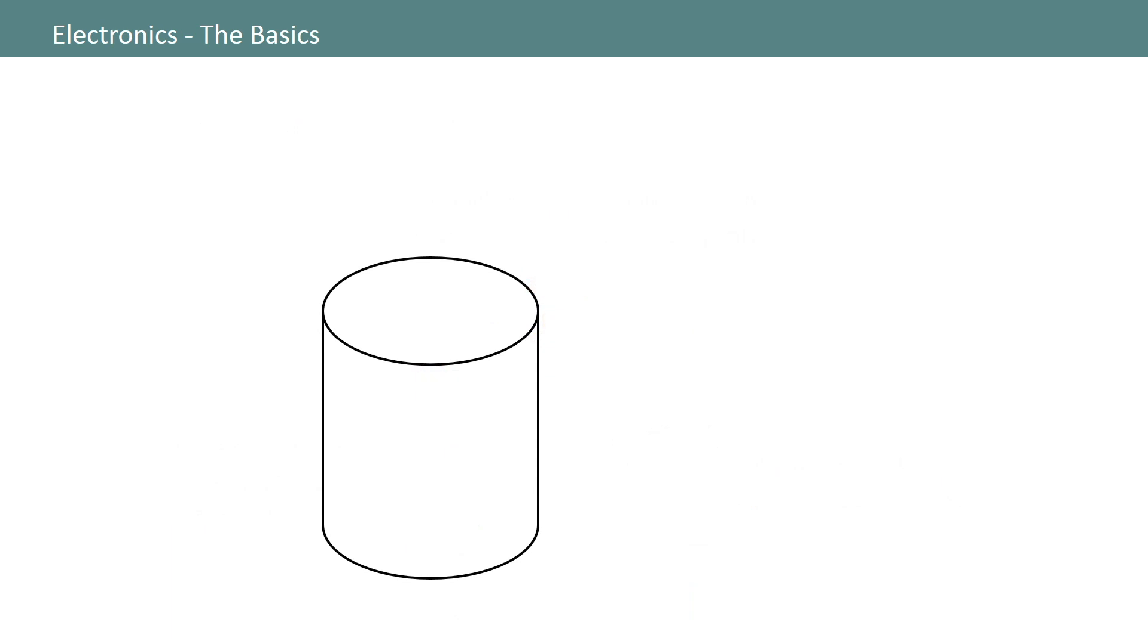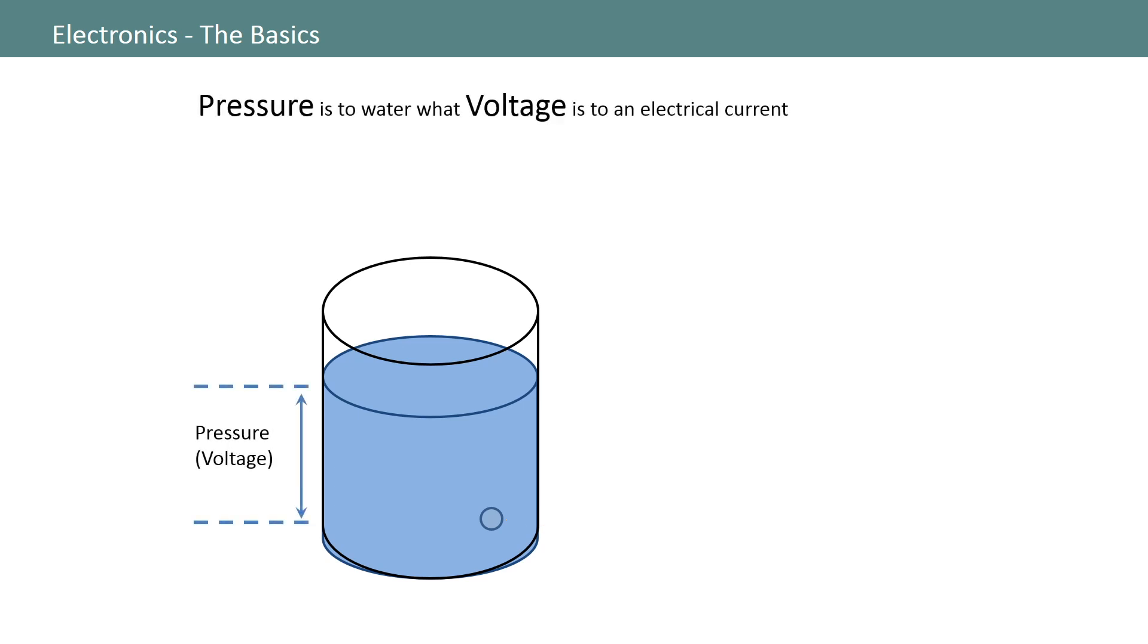Here's another way of using water as a metaphor for electricity. If I start with a bucket and fill it with water, and then I take a drill and make a small hole near the bottom of the bucket, there will be water pressure pushing on that hole, and that pressure will be proportional to how much water is in the bucket.